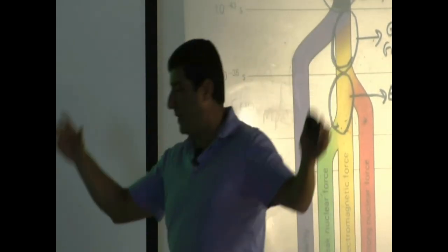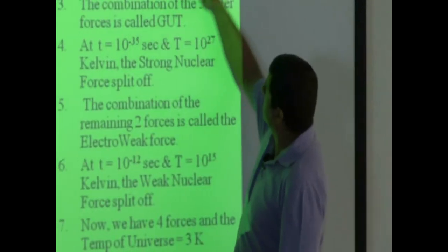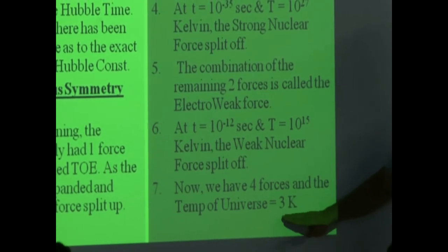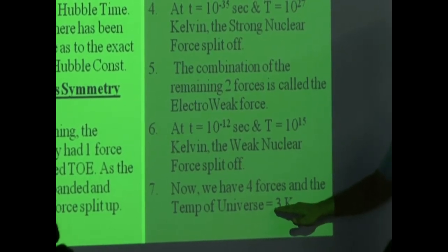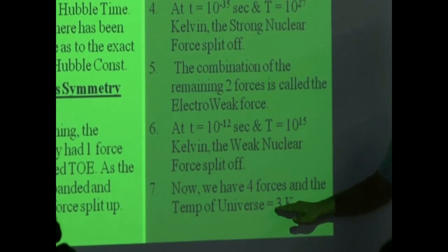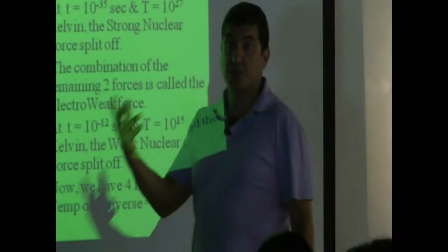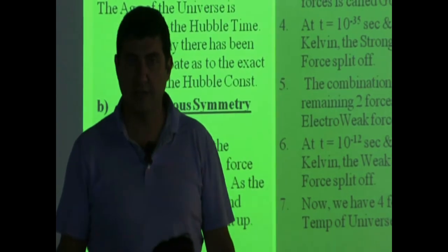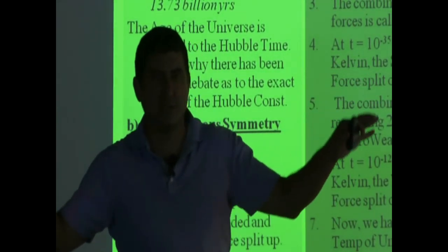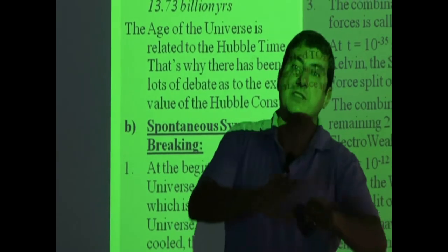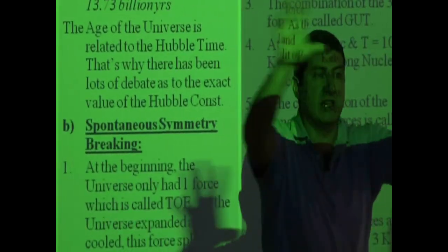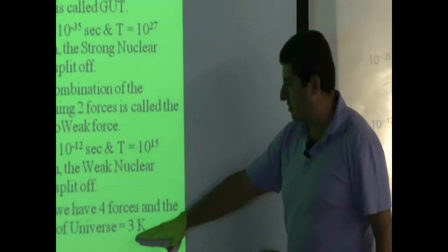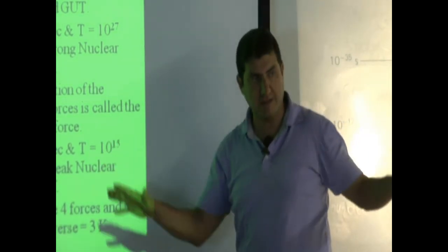As the universe is expanding, it's cooling. Look how hot it starts — 10 to the 32 Kelvin. Now the average temperature of the universe is 3 Kelvin. That's weird — 3 Kelvin is just 3 degrees above absolute zero. Of course, there are stars and planets that are very hot — 50,000 Kelvin, 30,000 Kelvin, some planets 1,000 Kelvin. But if you average all the temperature of the universe, including empty space and vacuum, the universe as a whole is a cold place. When we say the temperature of the universe is 3 Kelvin, we're averaging out everything.